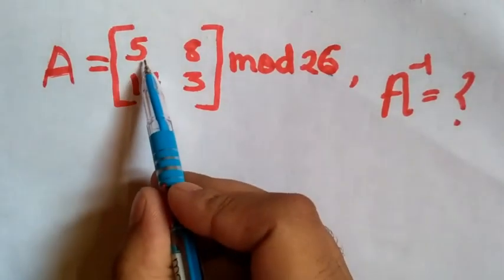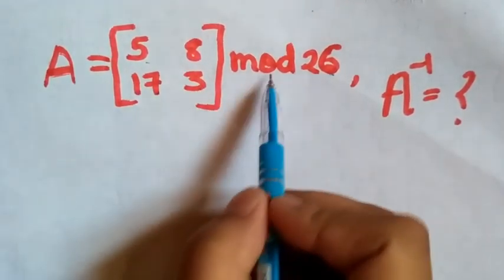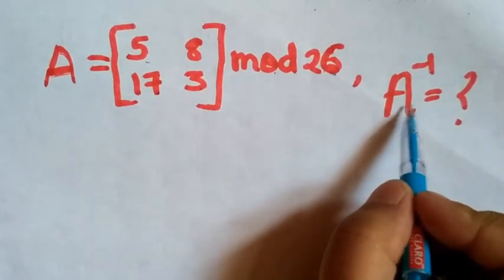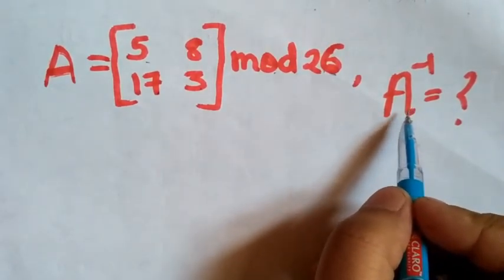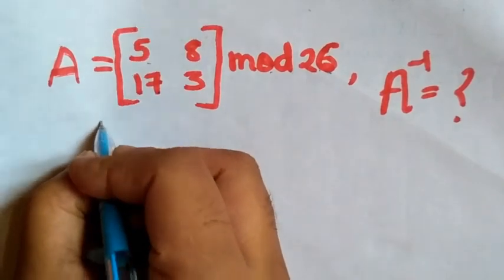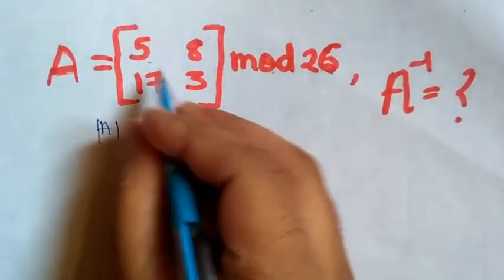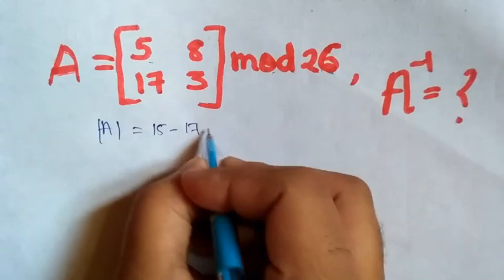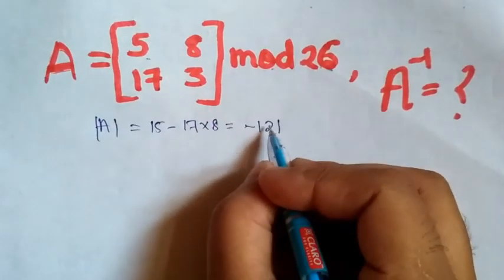The matrix is A equals 5, 8, 17, 3 mod 26, and we have to find A inverse. First, find the determinant of A, which is 5 into 3, 15 minus 17 into 8.